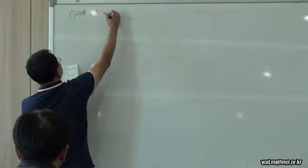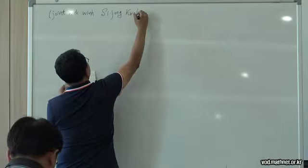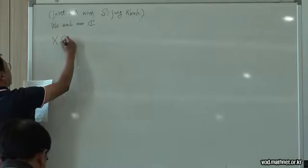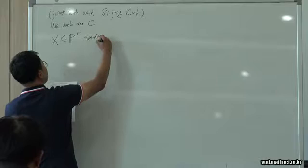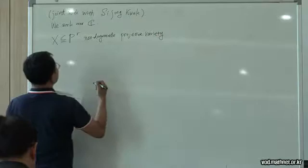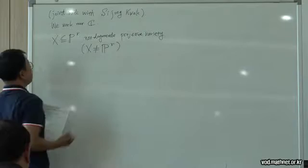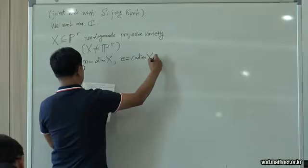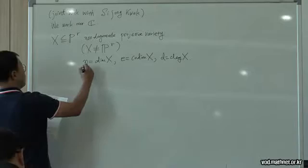This is based on joint work with Professor Si Jong Kwak, and we always work over C. Let X be a non-degenerate projective variety, excluding the case X equals PR. The dimension is denoted by N, E is the co-dimension of X, and D is the degree of X.